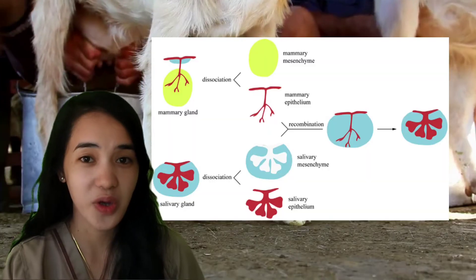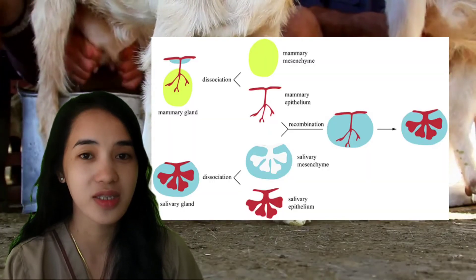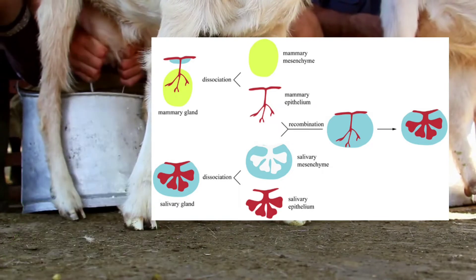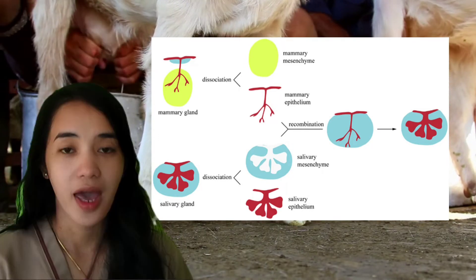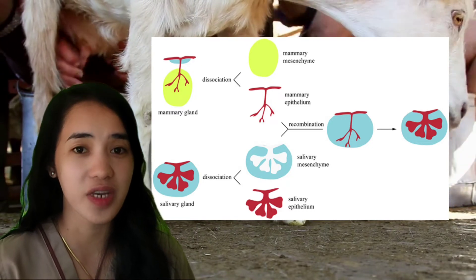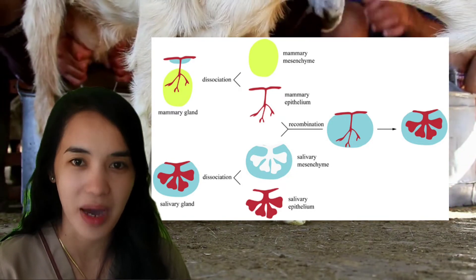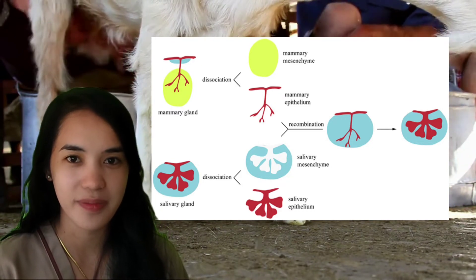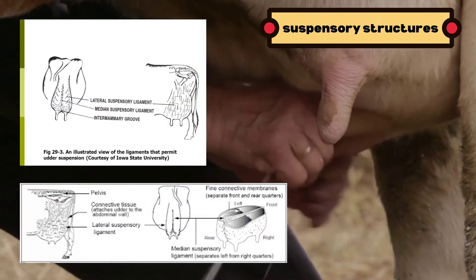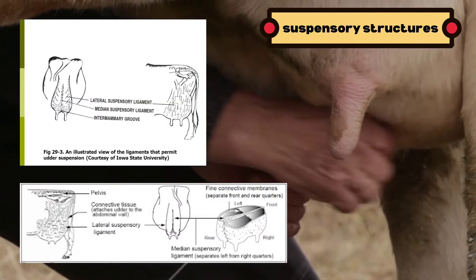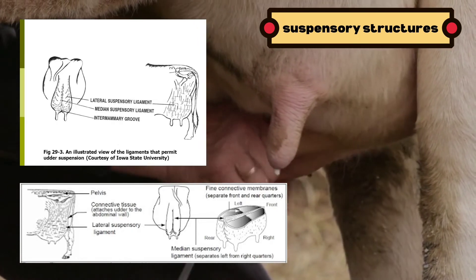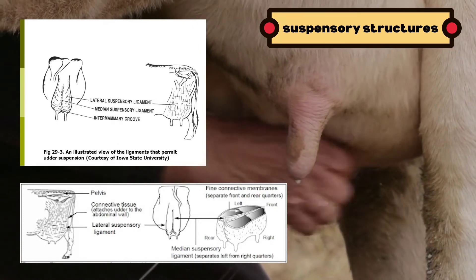Did you know that the embryonic ectoderm is the source of the mammary glands? Next, we will discuss the internal anatomy and internal functions involved in the mammary gland.